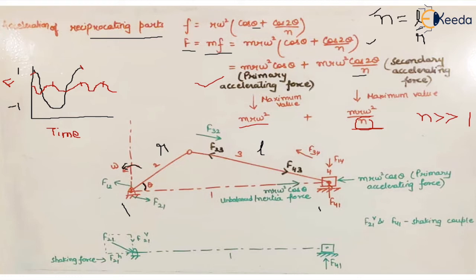In a slider crank mechanism, when the crank is rotating, the piston undergoes translatory motion. For the first half of the stroke, the primary accelerating force mrω² acts in one direction, meaning the inertia force acts in the opposite direction with the same magnitude mrω²cosθ. We will now draw the free body diagrams of all the components and identify all forces acting on them, using the known conditions for static balancing of systems with two forces, three forces, and a torque.